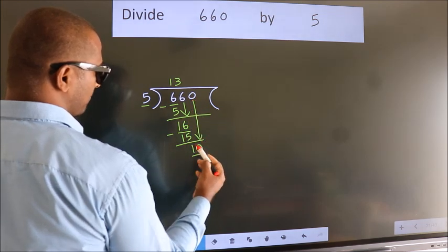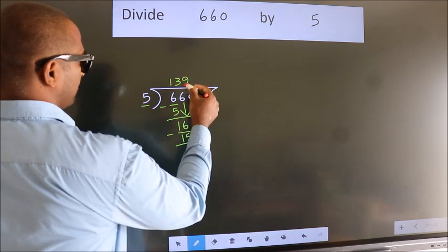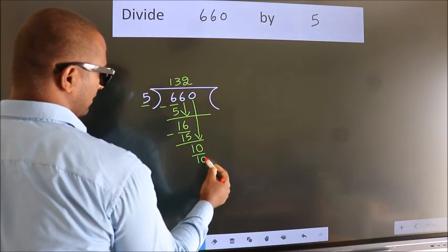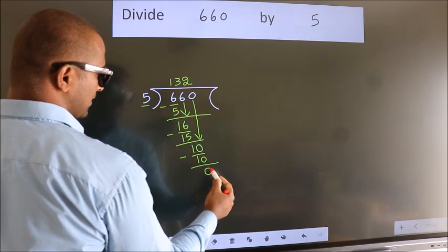So 10. When do we get 10? In 5 table. 5 2s 10. Now we subtract. We get 0.